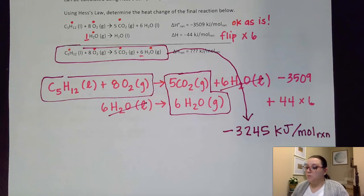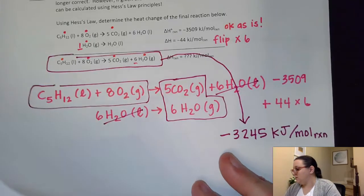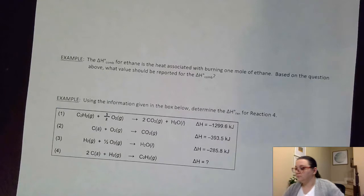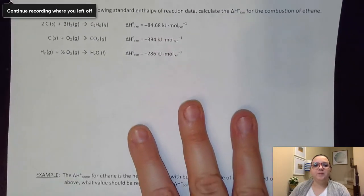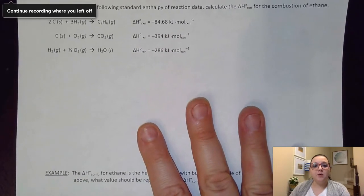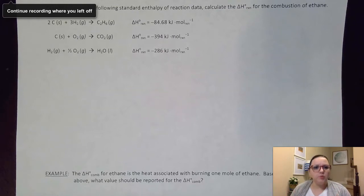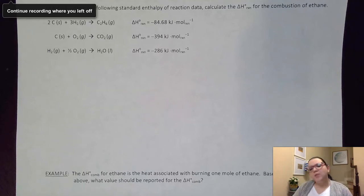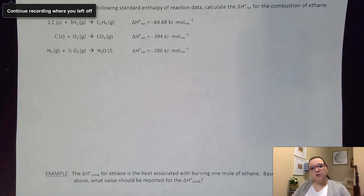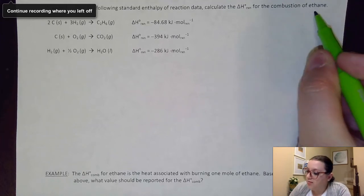Let's go ahead and do one more example together. Using the following standard enthalpy of reaction data, calculate the delta H of the reaction for the combustion of ethane. They give us three individual reactions with some delta H values. However, they don't give us the overall reaction yet, so we're going to first take the time to write that equation.